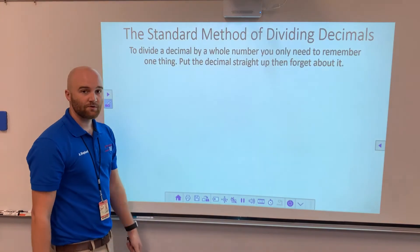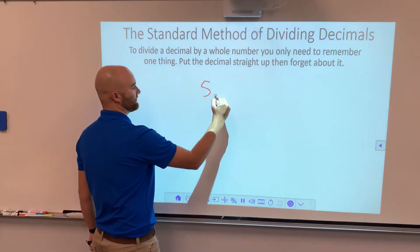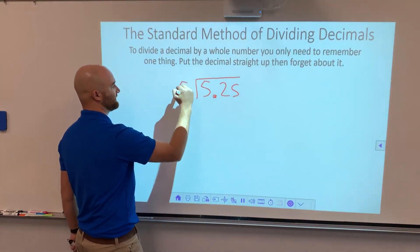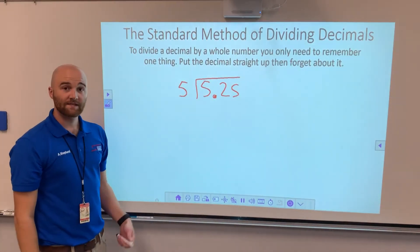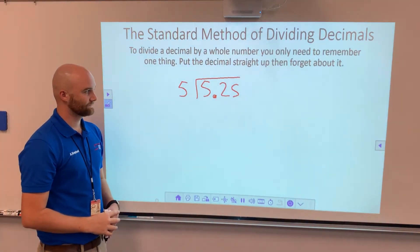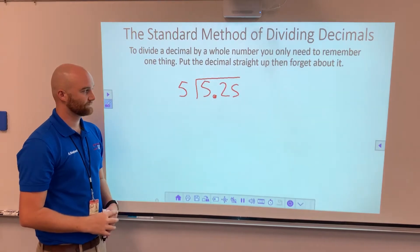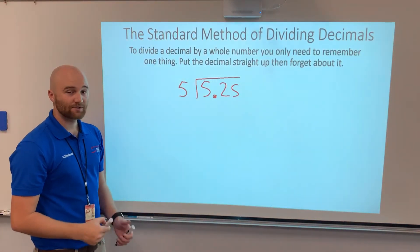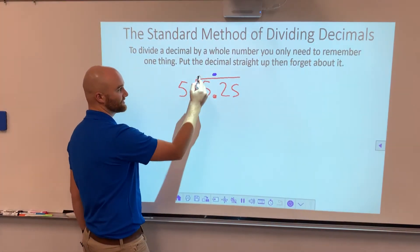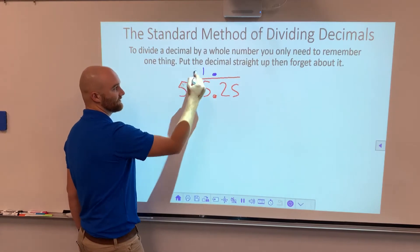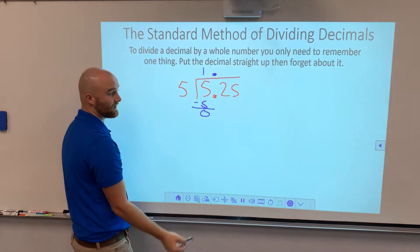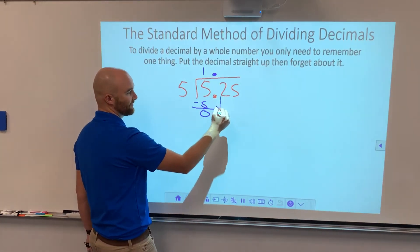Let's try two more problems. Let's try this one where I have 5.25 divided by 5. Go ahead and see if you can solve that one yourself. Okay, let's see how we solve it. So first I'll put the decimal straight up. Then I'll try to divide. 5 goes into 5 one time. 5 times 1 gives me 5. I do my subtraction. I have a 0 here. I can't stop because I still have things to bring down. So I bring this 2 down.